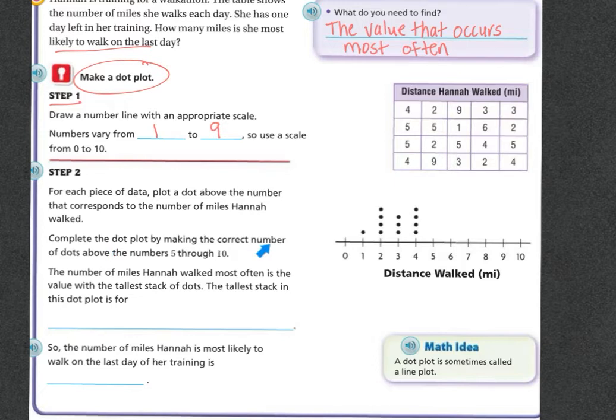For each piece of data, plot a dot above the number that corresponds to the number of miles Hannah walked. Complete the dot plot by making the correct number of dots above the numbers 5 through 10.